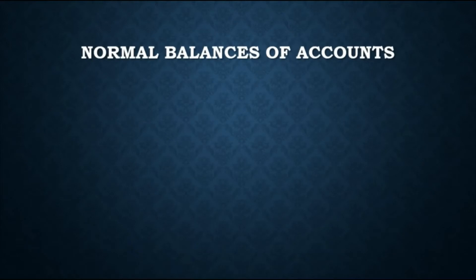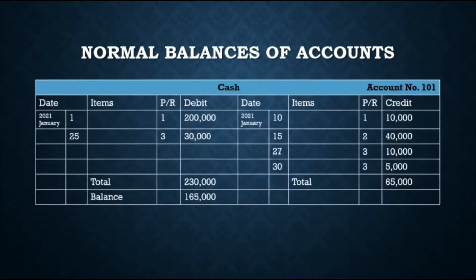After posting all journal entries to the ledger, the amounts in the debit and credit columns are totaled, and the difference between them determines the account balance. For example, in the Cash ledger, total debits are 230,000 and total credits are 65,000, so the ending balance of Cash as of January 31, 2021 is 165,000 — which is 230,000 debit minus 65,000 credit.